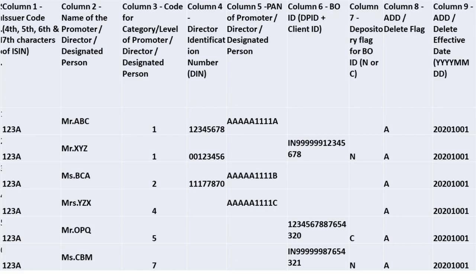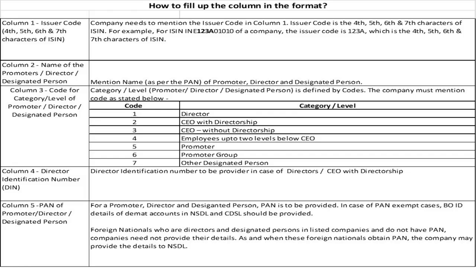How to fill up the columns in the format: Column 1 - Issuer Code is the 4th, 5th, 6th and 7th characters of the ISIN. The company needs to mention the issuer code in this column. For example, for ISIN INE123A0101, the issuer code is 123A, which is the 4th, 5th, 6th and 7th characters of the ISIN.